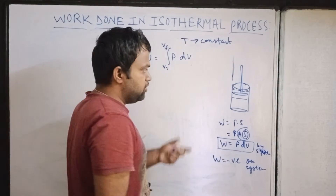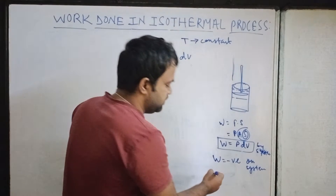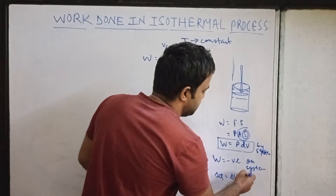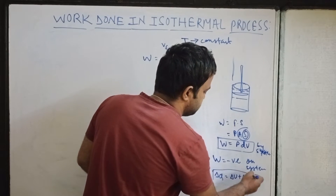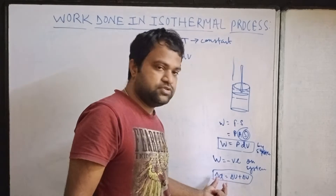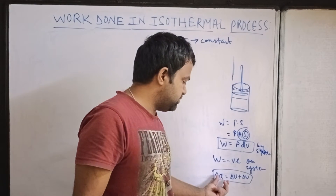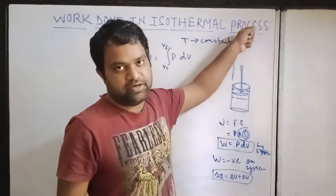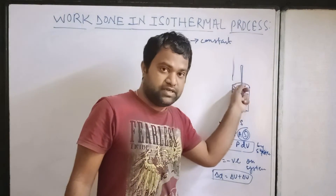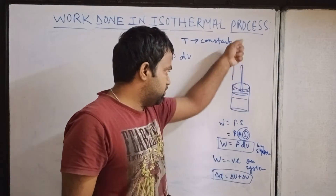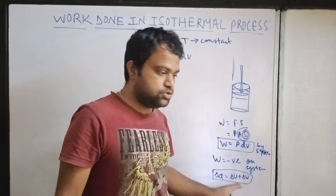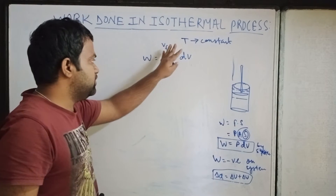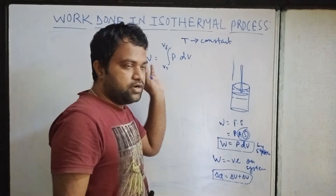From the first law of thermodynamics: delta Q equals delta U plus delta W, where delta U is the change in internal energy and delta W is the work done. The heat you supply to the system changes the internal energy and does work by expanding it. Here, work is done by the gas. If you compress it, delta W involves a volume reduction.